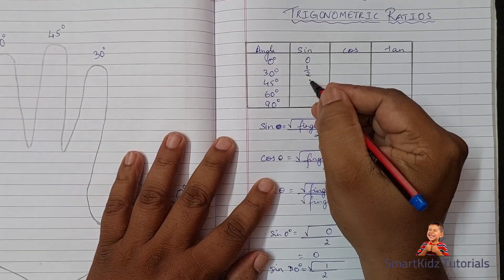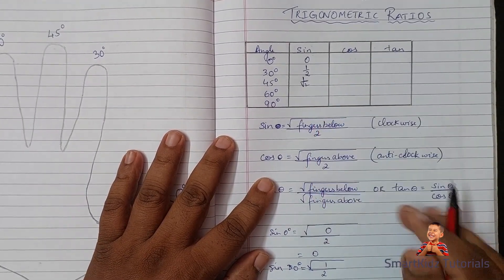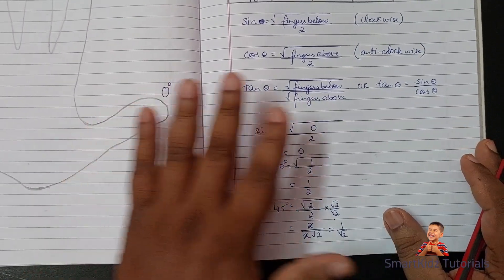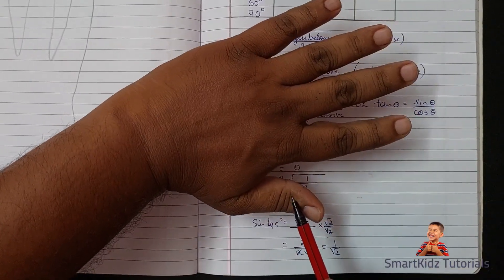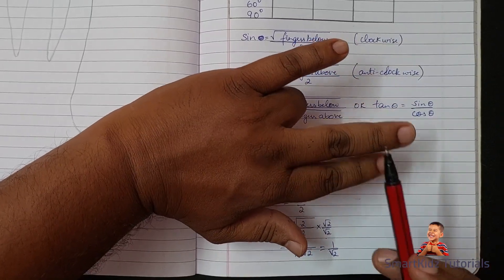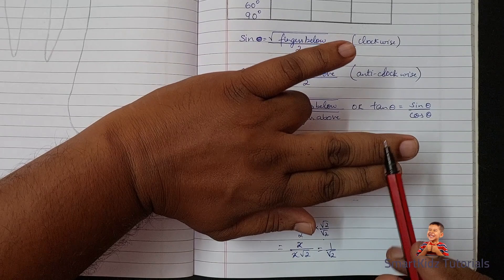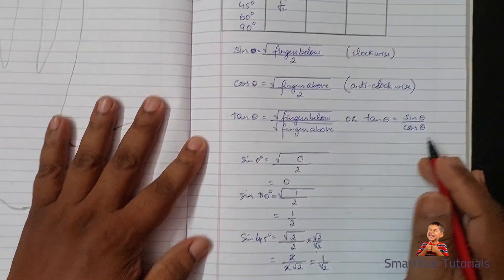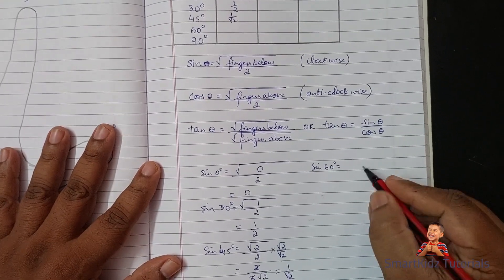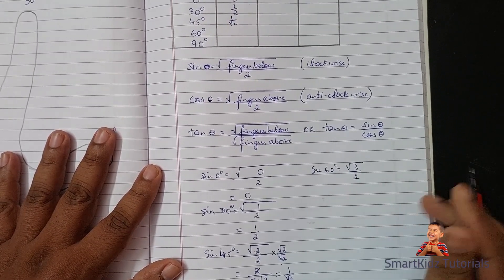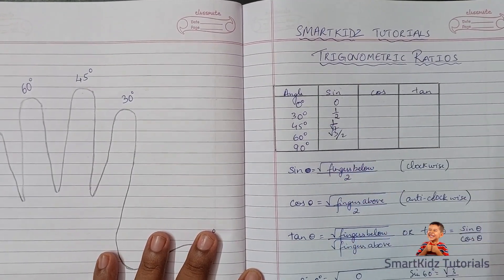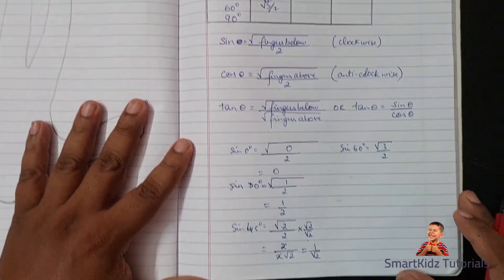So sine of 45 degrees is 1 upon root 2. Next we go to sine of 60 degrees. I close the ring finger and count the fingers below: 1, 2, and 3. So sine of 60 degrees equals square root of 3 upon 2.